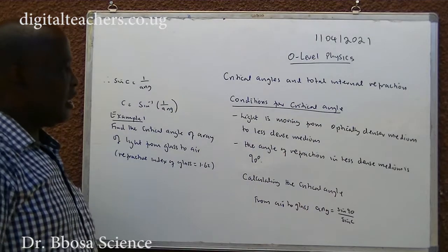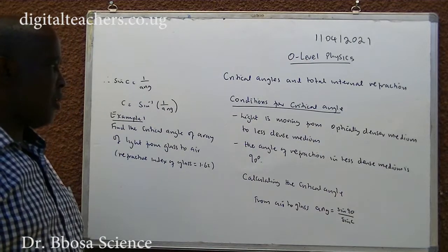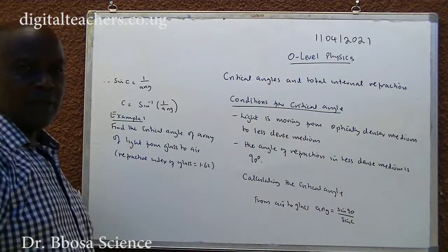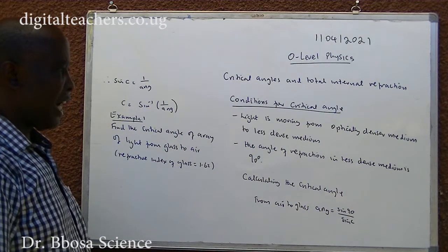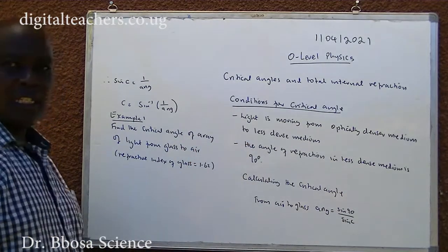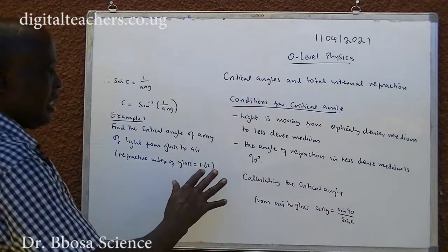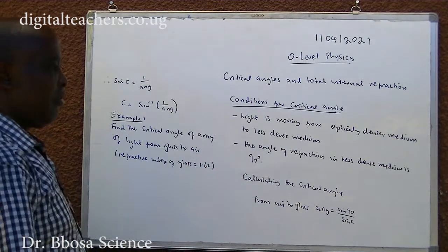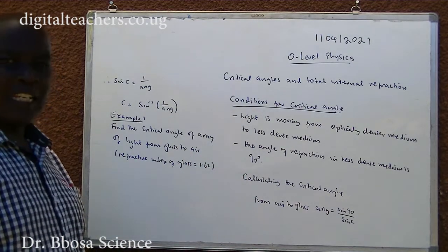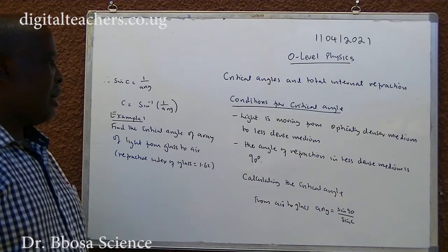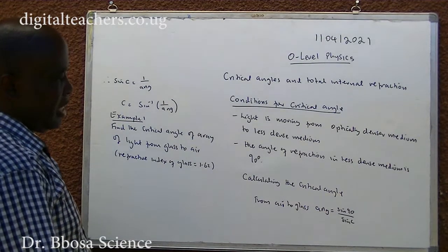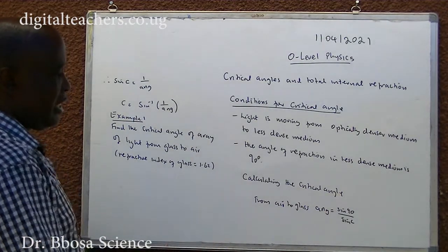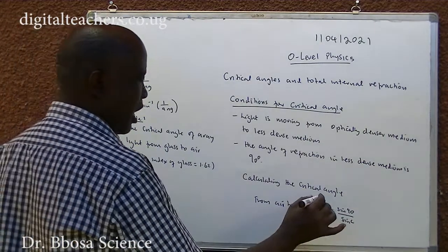Conditions for critical angle: Light must be moving from an optically denser medium to a less dense medium. The angle of refraction in the less dense medium must be 90 degrees.